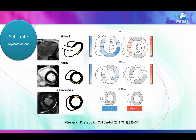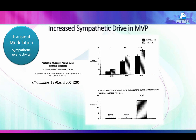As for the substrate: because of the disjunction and its pulling effect, there is fibrosis of the myocardium. This fibrosis can be mid-wall, patchy, or sub-endocardial. Studies have documented this kind of fibrosis more commonly in mitral valve prolapse than in non-MVP control groups, and this fibrosis is another reason for arrhythmia.